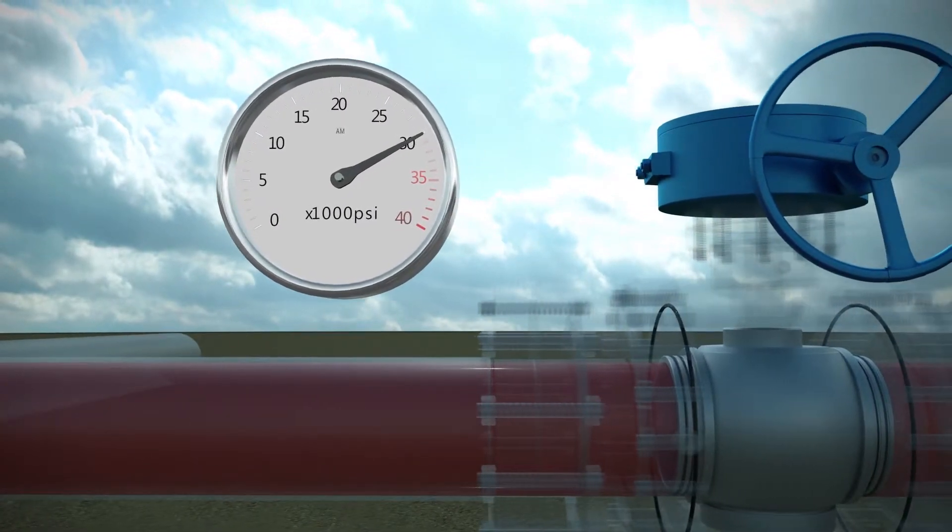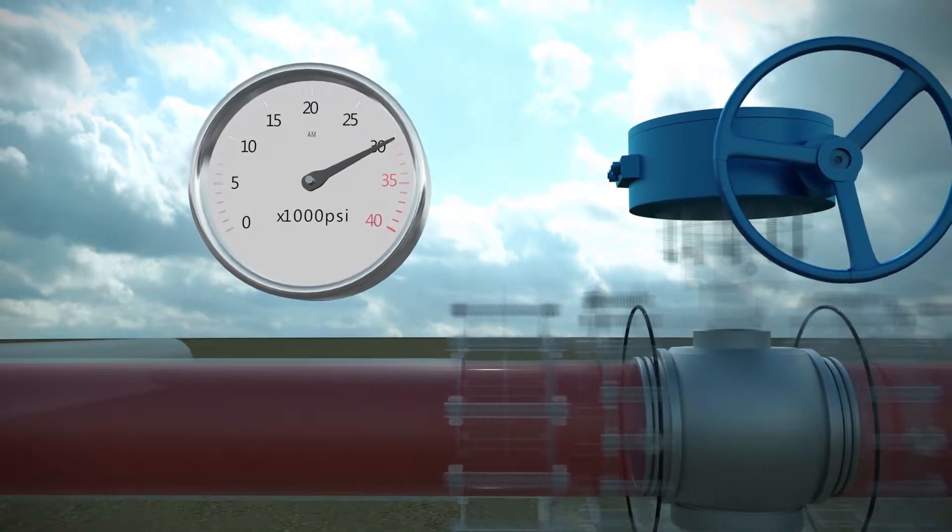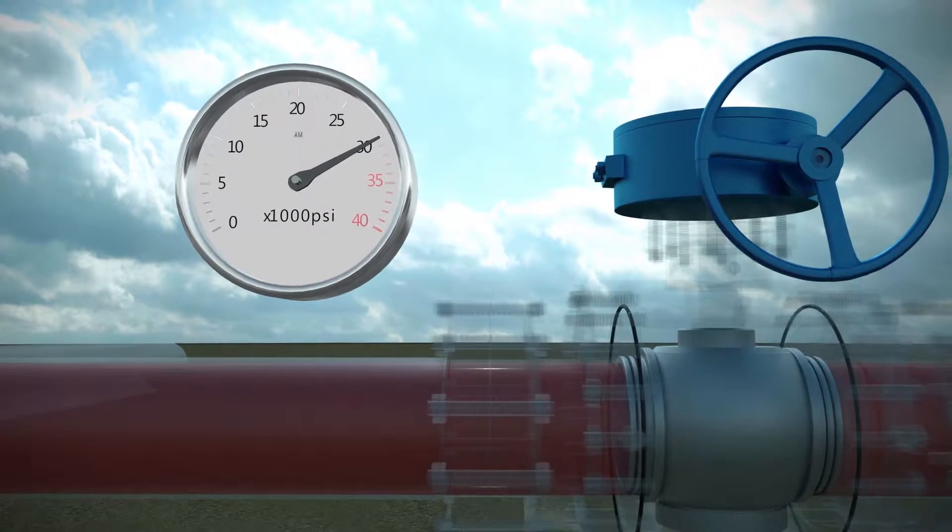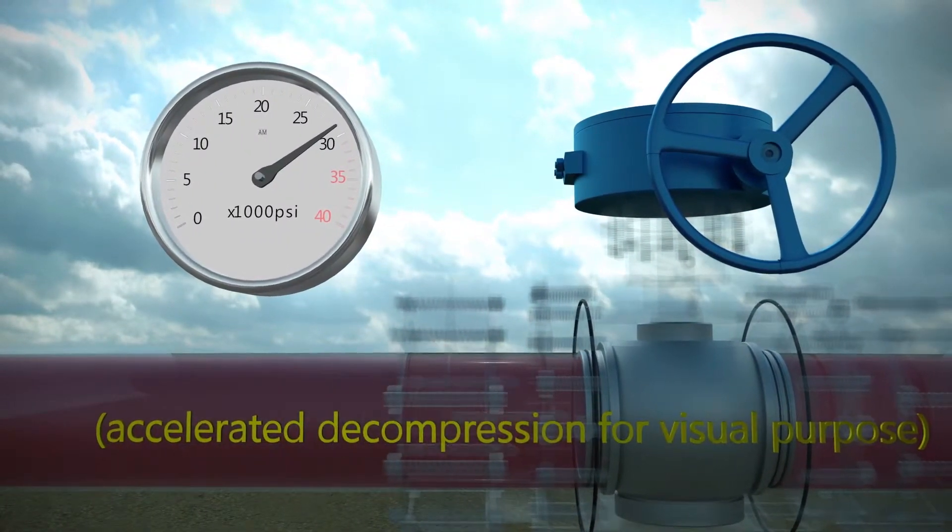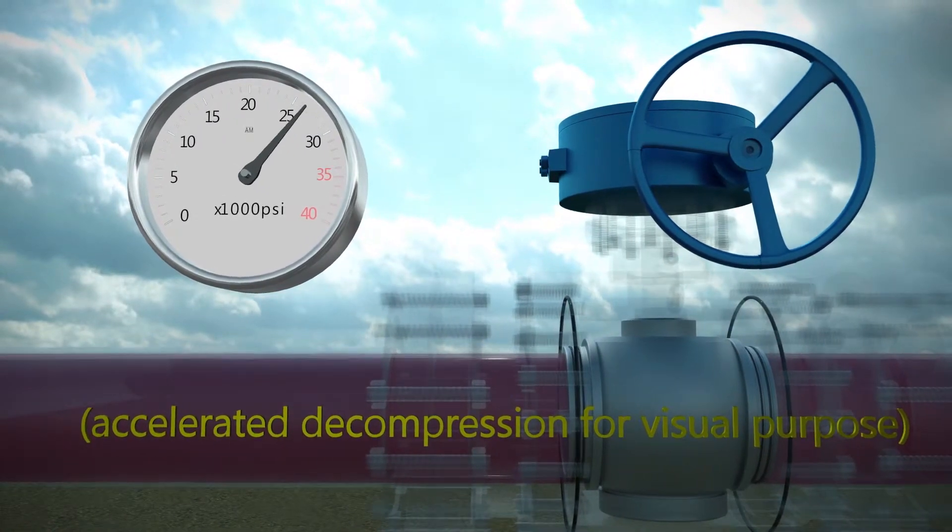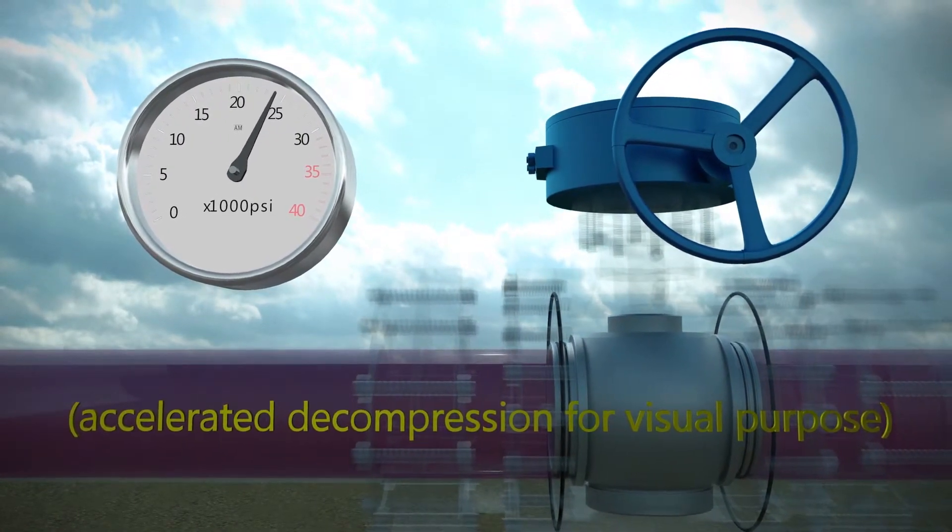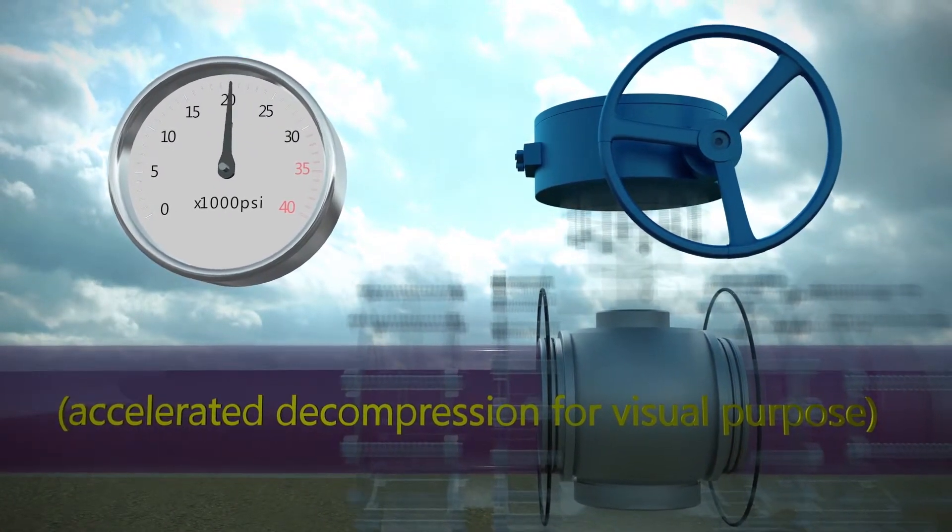This phenomenon occurs when the seals are exposed to high pressure gas at elevated temperatures for a prolonged period of time. When the external pressure is reduced, the gas dissolved within the material comes out of solution to form micro-bubbles. As the gas expands, it will permeate out of the material.